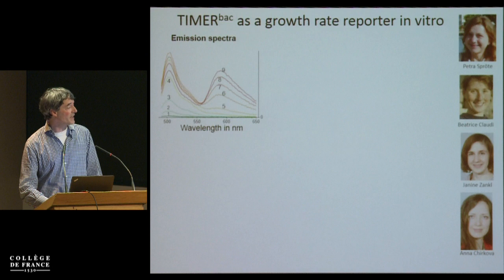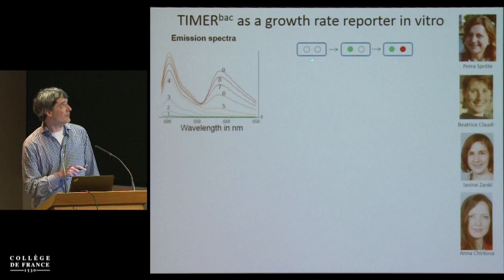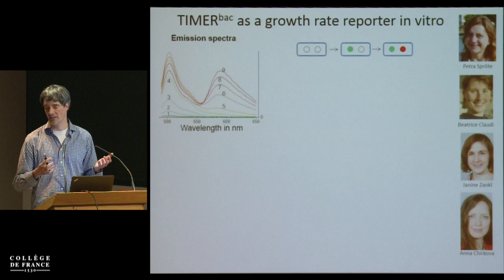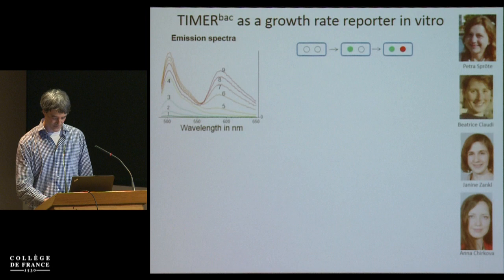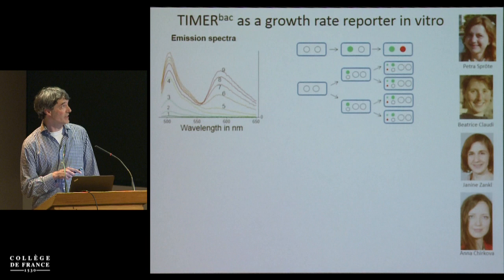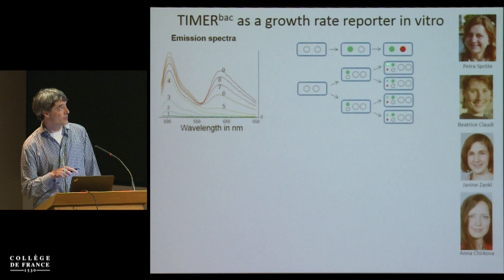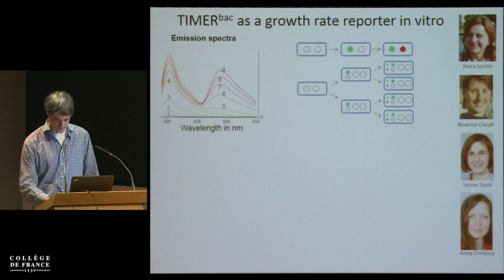If the cell doesn't divide, all molecules have enough time to mature and you get a green-red mixture. However, if the bacteria are dividing, while the proteins are maturing, they are also being diluted out because of volume increase. The green protein still rapidly matures and forms a green color, but the red one is slow and only becomes red in the granddaughter generation when diluted out. So the green-to-red ratio changes depending on the division rate.